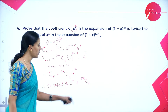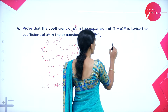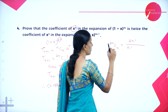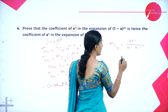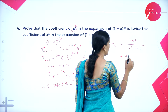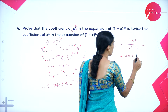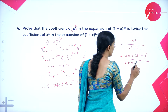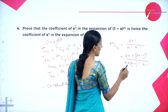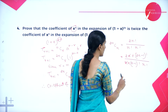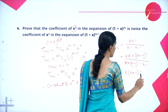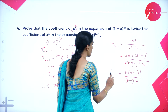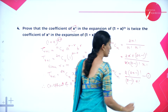Expanding 2nCn = (2n)! / (n! · n!). We can write this as [2n · (2n-1)!] / [n · (n-1)! · n!], which simplifies to 2 · (2n-1)! / [(n-1)! · n!]. Call this equation 1.